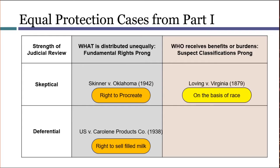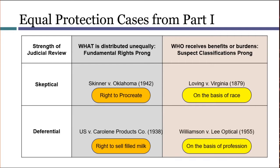Under the suspect classifications prong, we know from many cases, including Loving v. Virginia, that racial classifications are considered suspect. And in a case like Williamson, the classification that separates opticians from optometrists is not suspect. When there's case law directly on point, you don't need to reinvent the wheel.